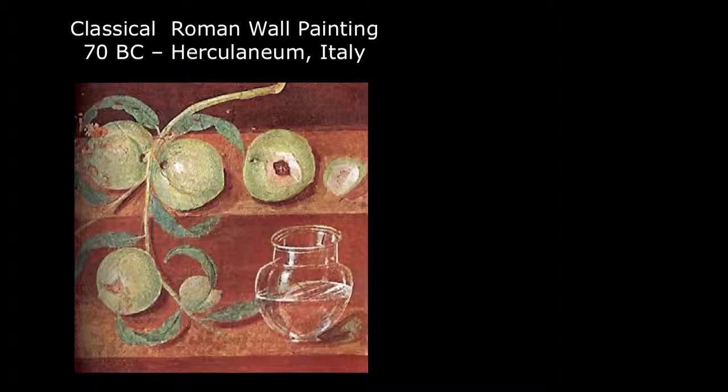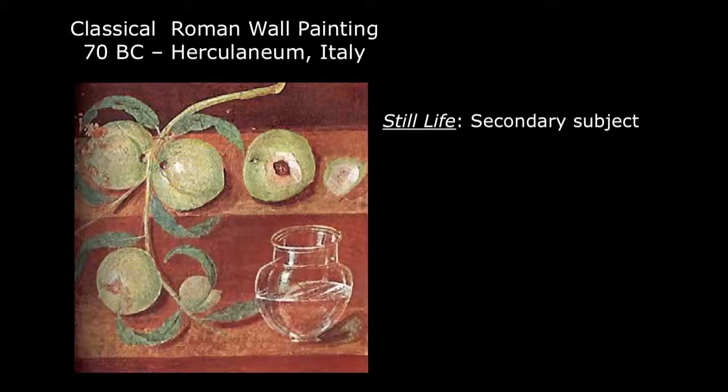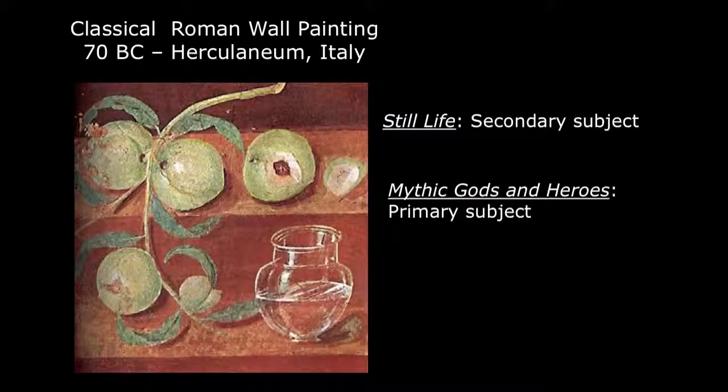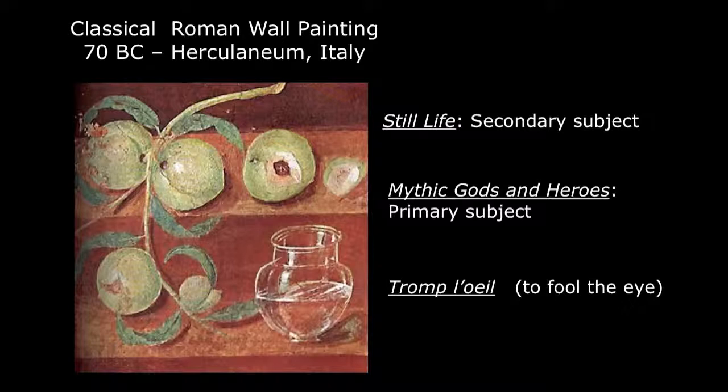Still-life painting can be found in classical Greek and Roman art, but it was considered a secondary subject compared to the portrayal of mythical gods and heroes. By 1300, starting with Giotto and his pupils in Italy, still-life painting was revived in the form of fictional niches on religious wall paintings depicting everyday objects in a realistic style called trompe l'oeil, to fool the eye.